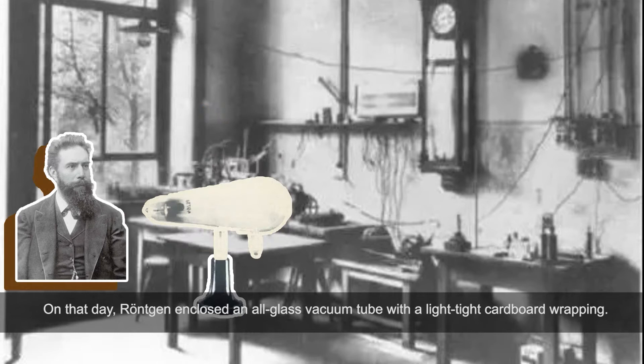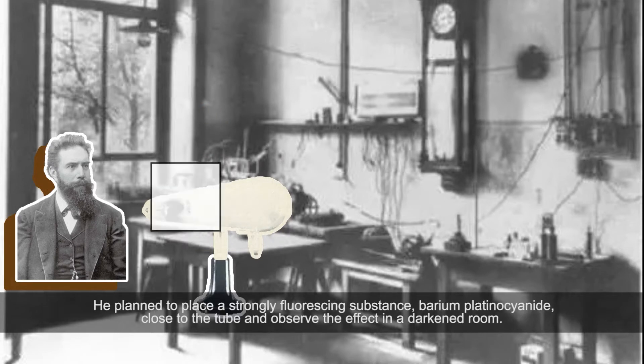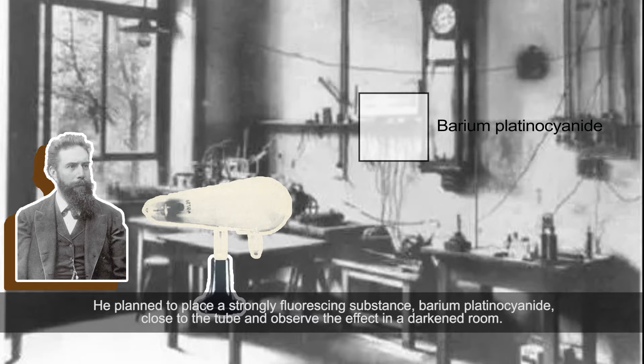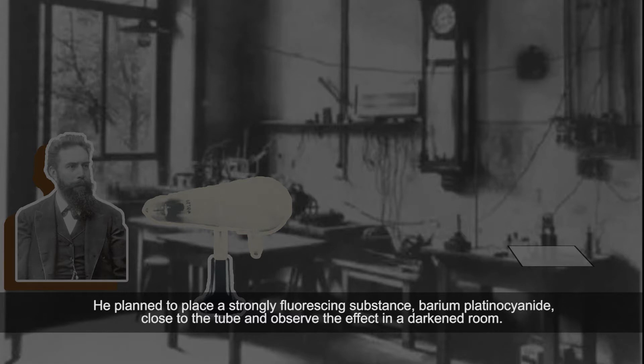He planned to place a strongly fluorescing substance, barium platinocyanide, close to the tube and observe the effect in a darkened room. In preparation, he first energized the tube to make sure that the power source and its connections did not emit sparks.